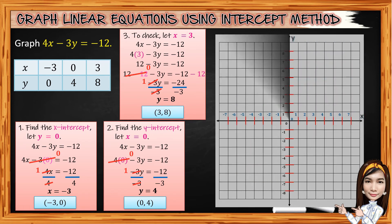Then plot the points on the Cartesian plane. The x-intercept negative 3 comma 0 is located on the x-axis to the left of the origin. The y-intercept 0 comma 4 is located on the y-axis above the origin. The third point 3 comma 8 is in quadrant 1. And for the last, connect the 3 points using a straight line.